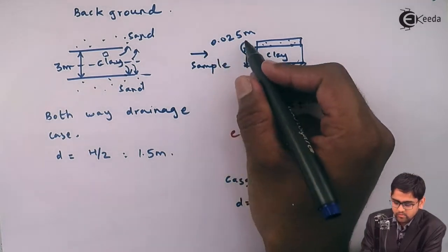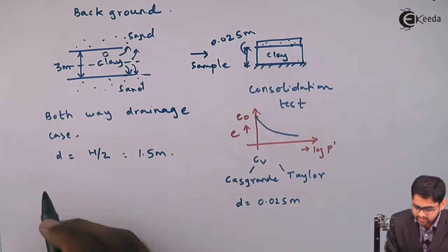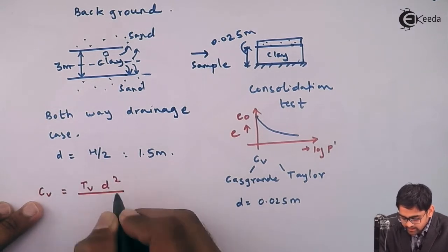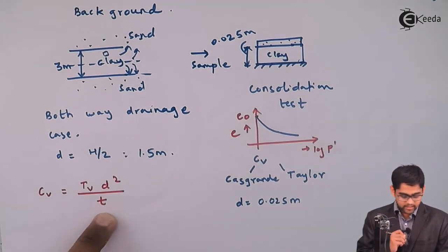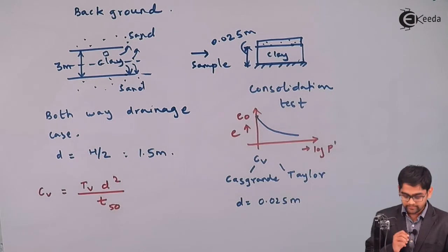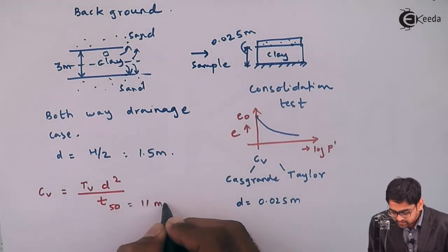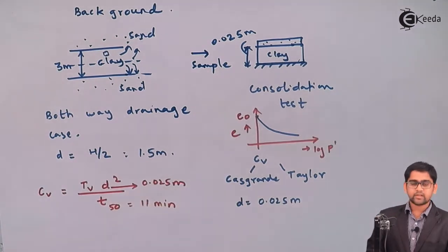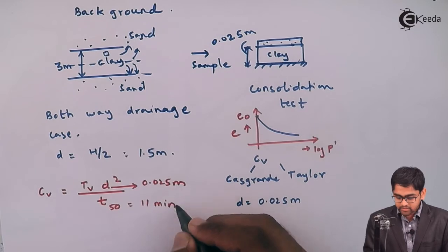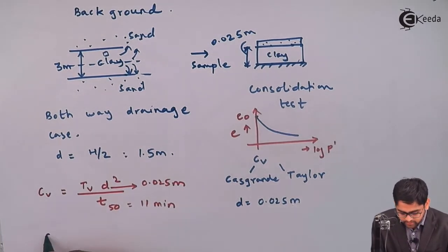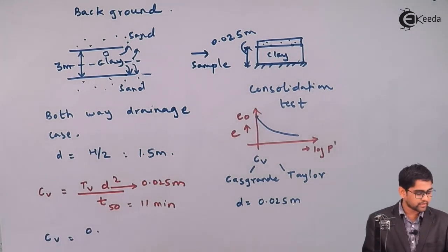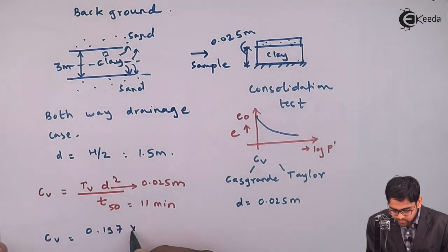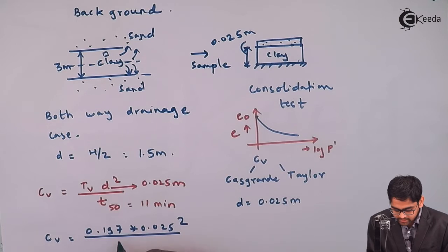We know that D equals 0.025 meters. The coefficient of consolidation C-V equals T-V times D-squared divided by T. The time T for 50% consolidation, T-50, is 11 minutes. We know D equals 0.025 meters. So C-V equals T-V (0.197) times 0.025 squared, divided by 11.